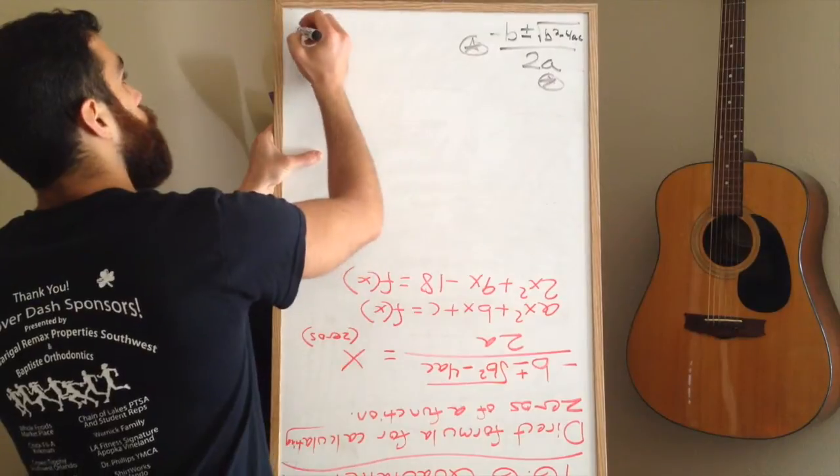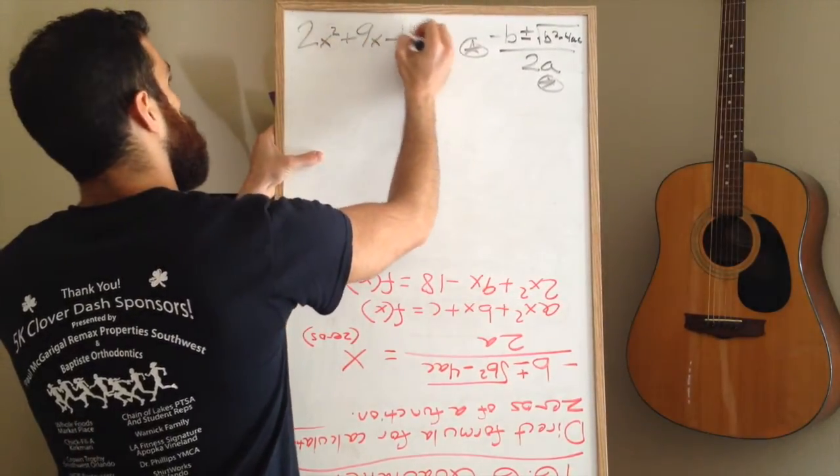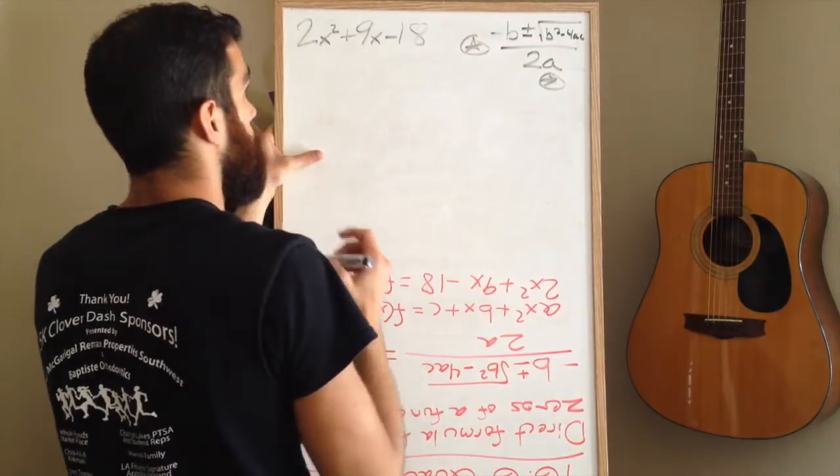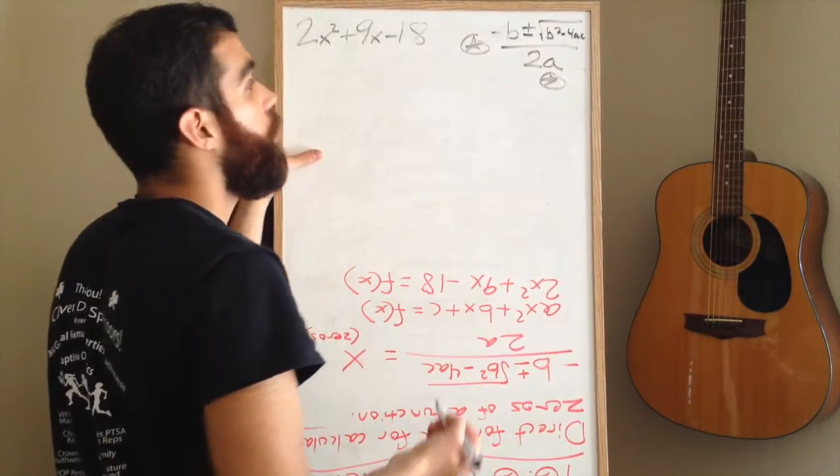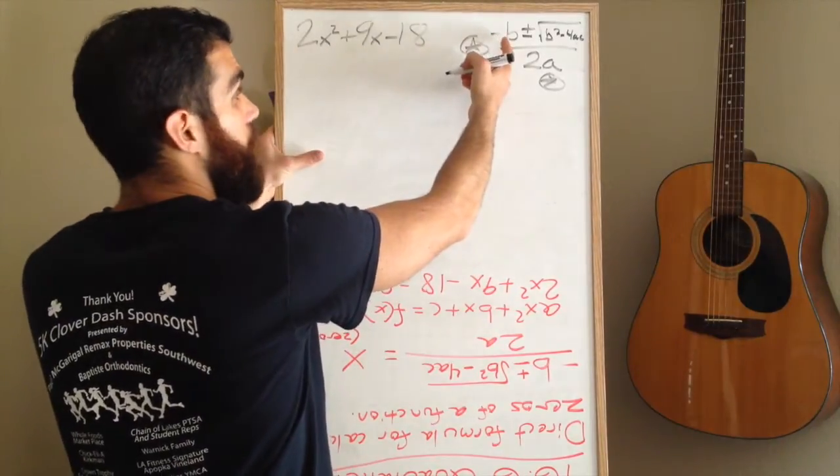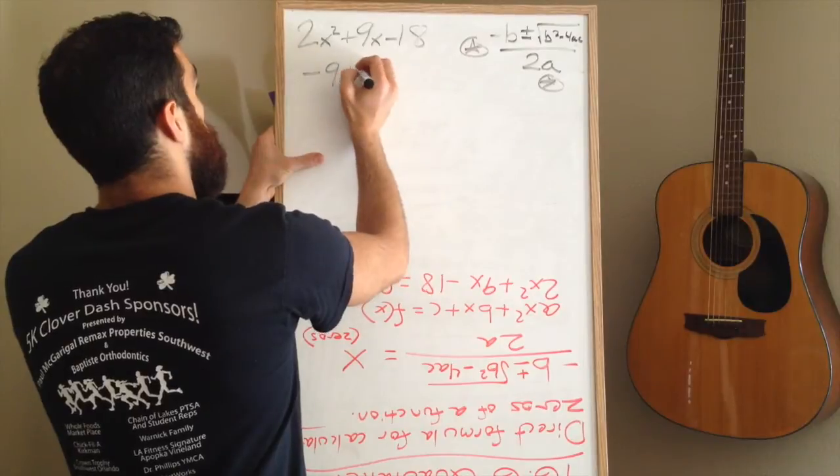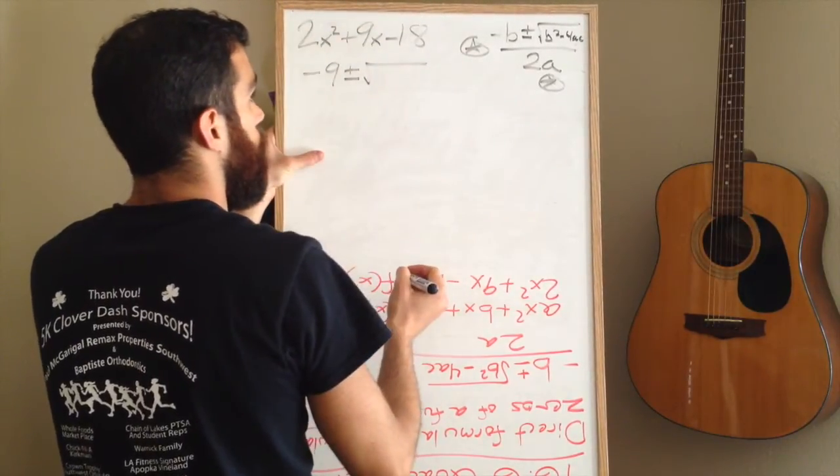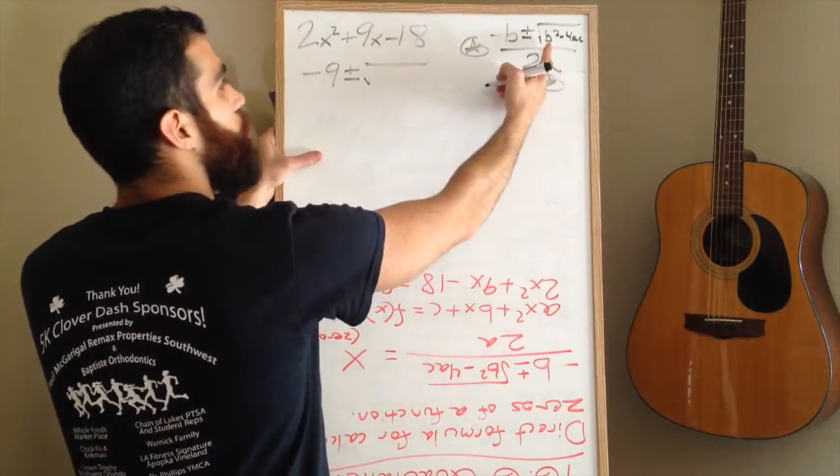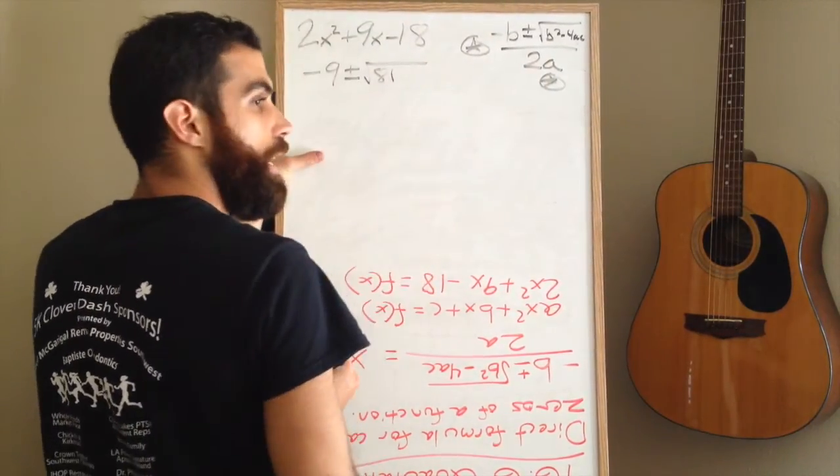Our example that we're going to do is 2x squared plus 9x minus 18. So let's start off by filling in the quadratic formula. The first thing that it says is negative b. b is 9, so we will write down negative 9. Then the plus minus sign, then the square root symbol. It then says b squared, and b is 9. Well, 9 squared is 81.